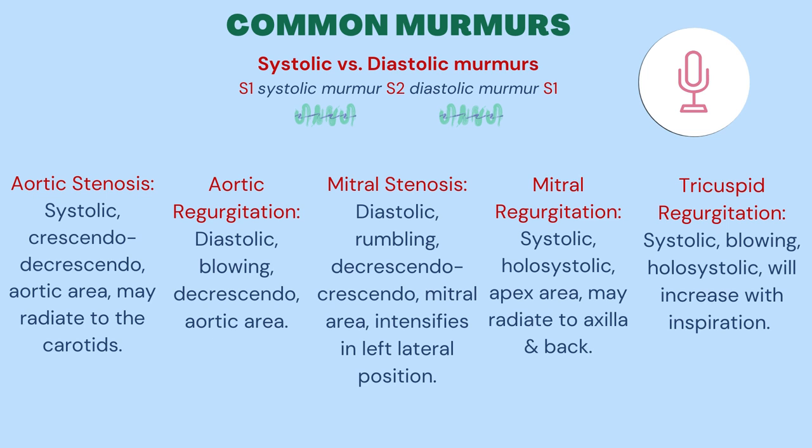Aortic regurgitation is sometimes also referred to as aortic insufficiency. Mitral stenosis is a diastolic murmur best heard at the apex with the patient in the left lateral decubitus position.